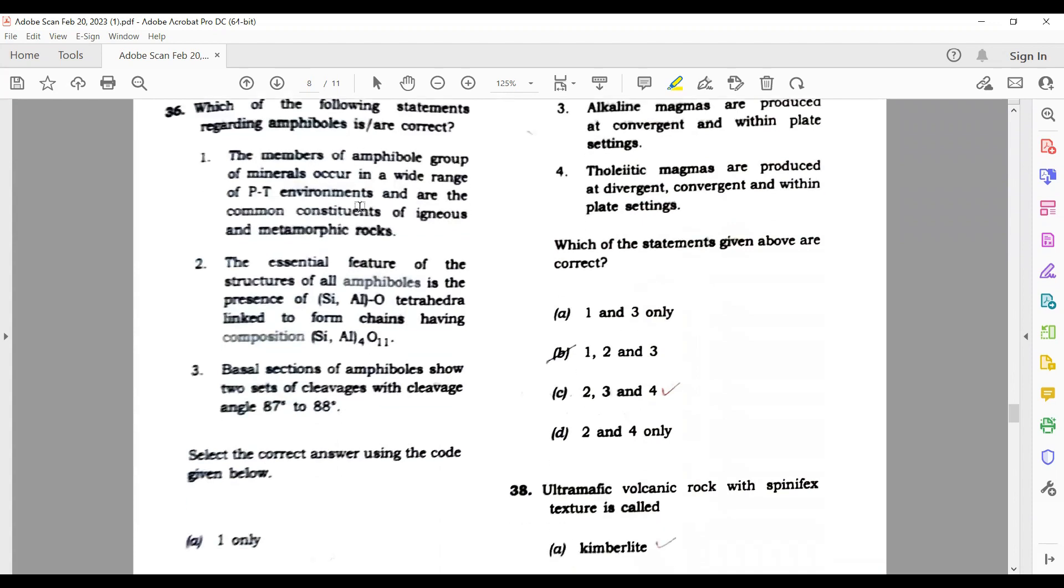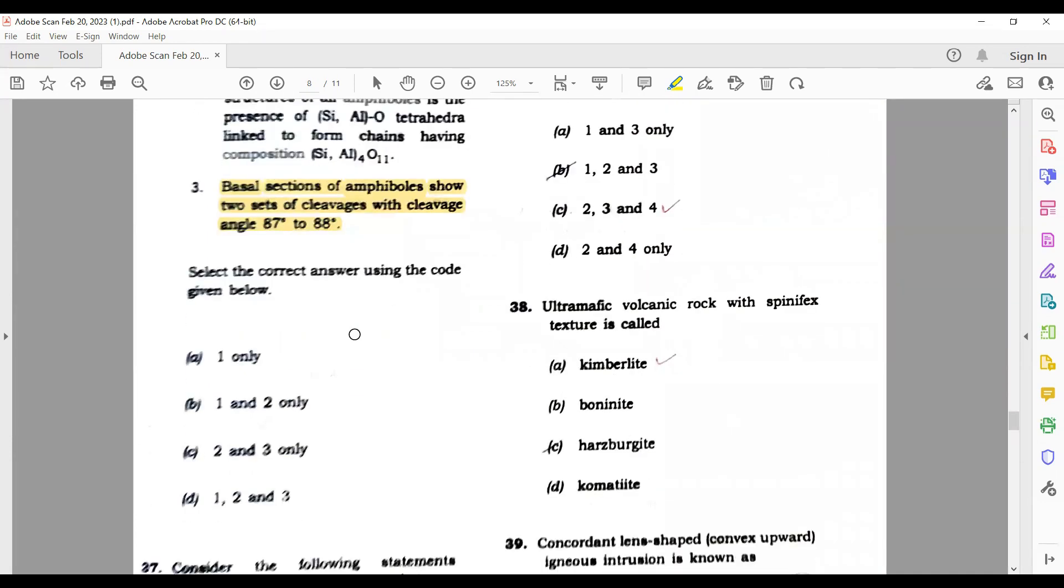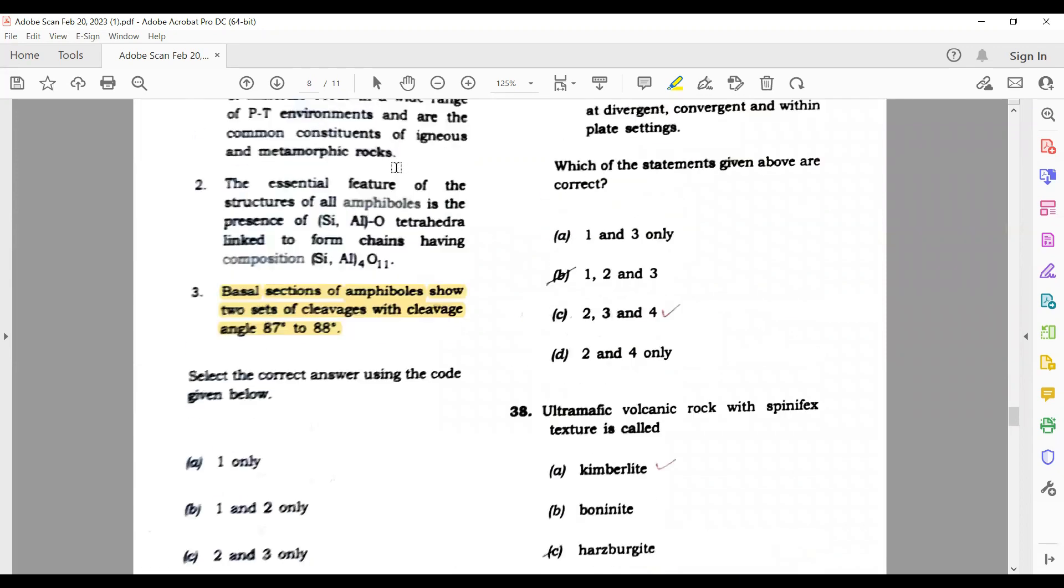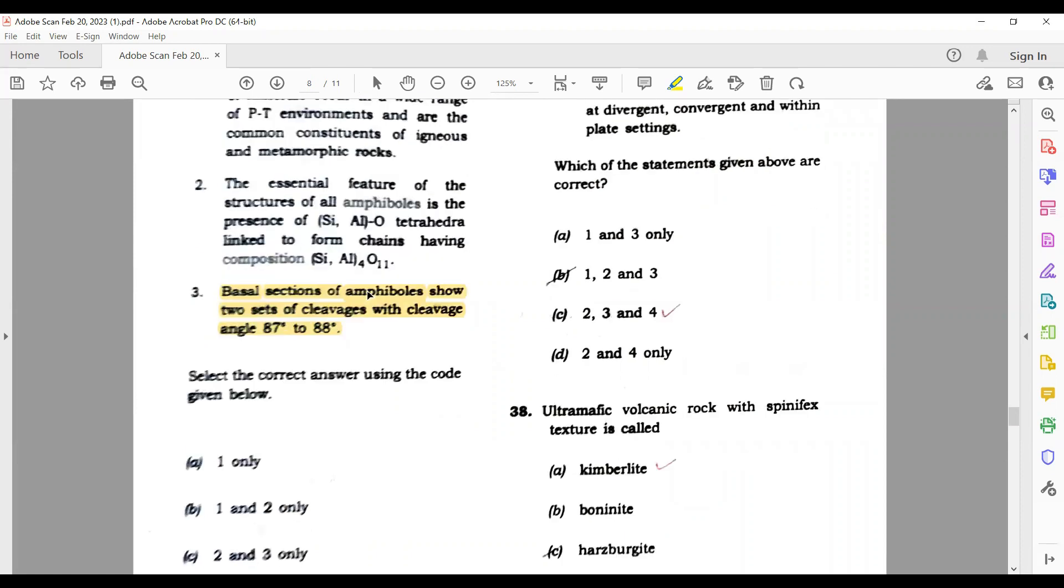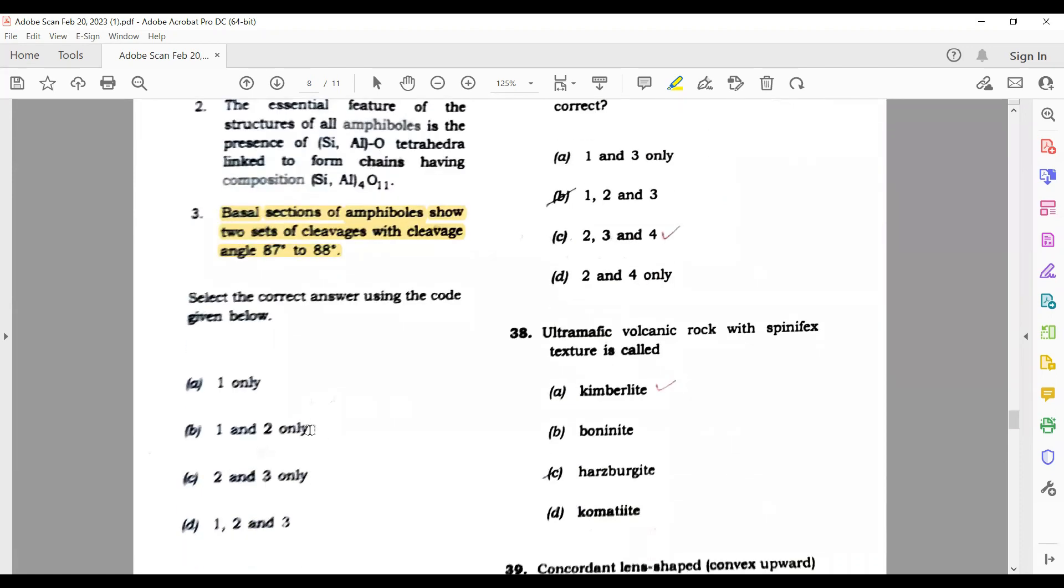Let's move to the next question 36. Again we have to find which is correct. Here I can see that third option - basal section of amphibole shows cleavage - this is wrong. So third is wrong, we are left with 1 and 2 option. The essential feature of the structure of all amphiboles is the presence of Si-O tetrahedra linked to form chains - this is right. So the option is 1 and 2.